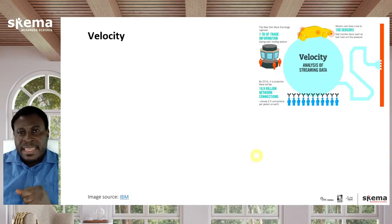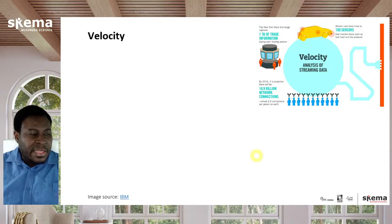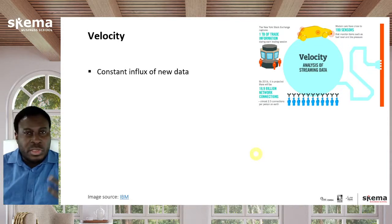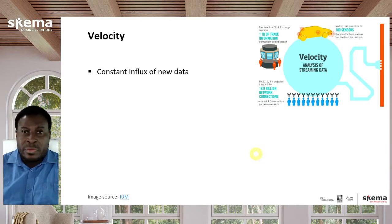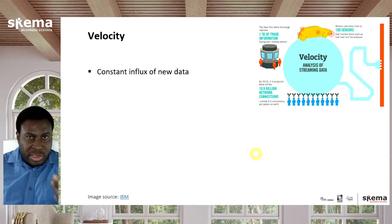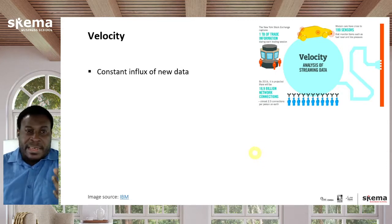The second V of big data is velocity. The idea behind velocity is that you have a constant influx of new data. With social media, people are constantly posting; there's new data all the time. You have sensor data from the Internet of Things, from a machine floor, from self-driving cars. There's a constant flow of data coming in, and this very rapid influx is another aspect that makes big data big.